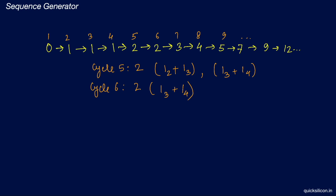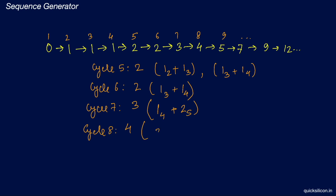Let's try to generate all the other numbers by going up to 3 cycles back. On cycle 7 the output is 3 — going 3 cycles back, we use cycles 4 and 5: 1 from cycle 4 plus 2 from cycle 5 gives 3. On cycle 8 the output is 4, generated using cycle 5 plus cycle 6. So the pattern is: to generate the next number, we add the number seen 2 cycles before the current cycle and the number seen 3 cycles before the current cycle.